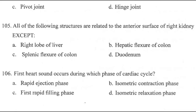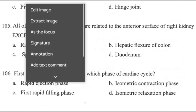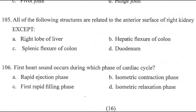Question 105: All of the following structures are related to the anterior surface of the right kidney except — right answer is C, splenic flexure of the colon. The anterior surface of the right kidney includes the right lobe of the liver, hepatic flexure of the colon, and duodenum. Splenic flexure of the colon is anterior to the left kidney.